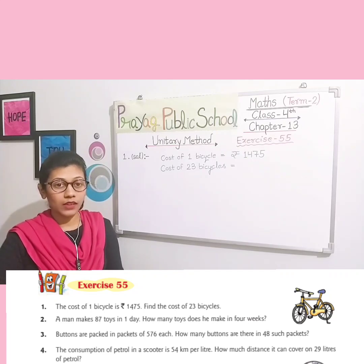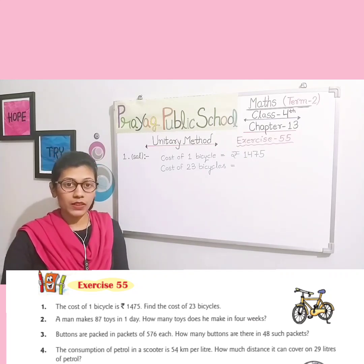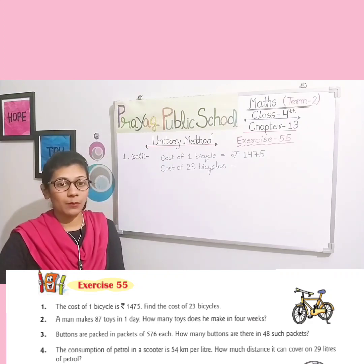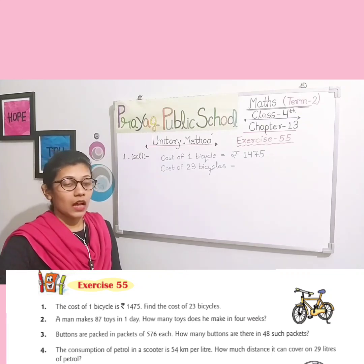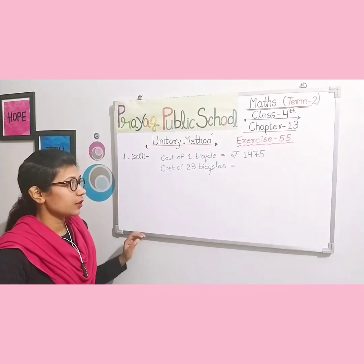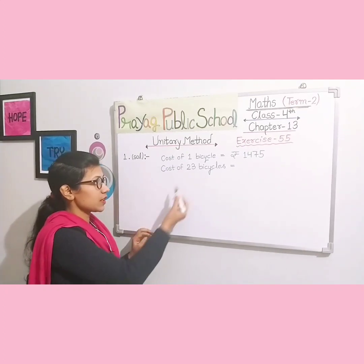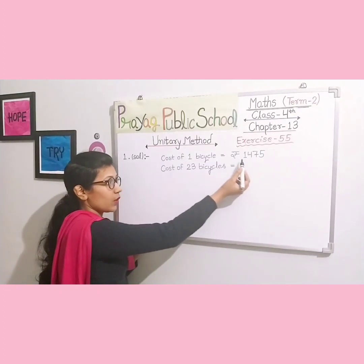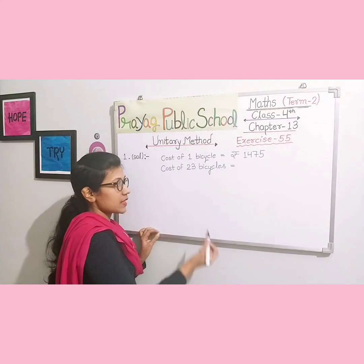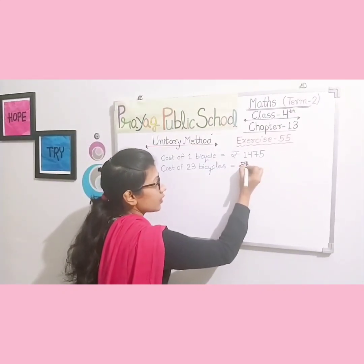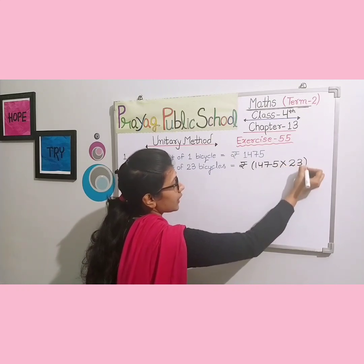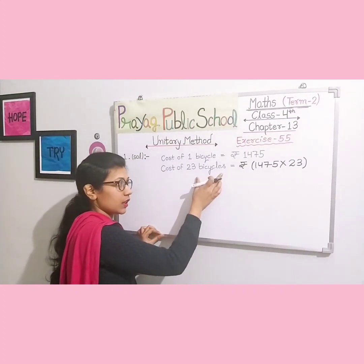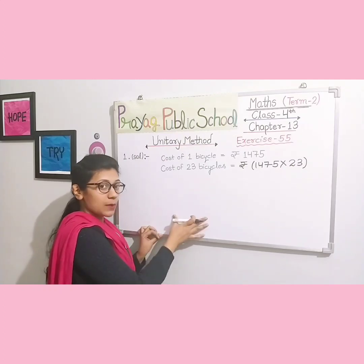The cost of one bicycle is rupees 1475. Find the cost of 23 bicycles. Since we need to find more value, we always do multiplication. You have to write your statements and solve the sums very properly — do not write direct solutions without a statement. So, solution: the cost of one bicycle is rupees 1475. The cost of 23 bicycles will be rupees 1475 multiplied by 23.